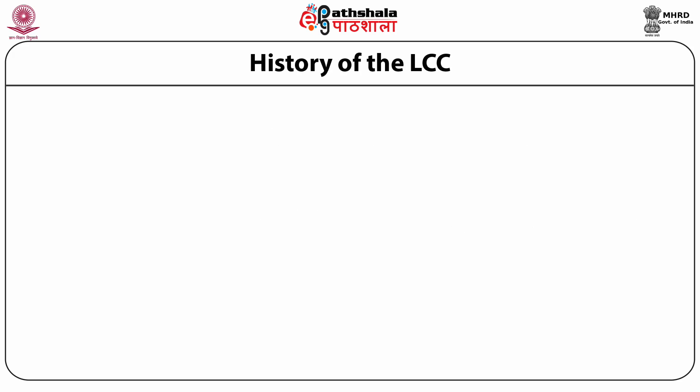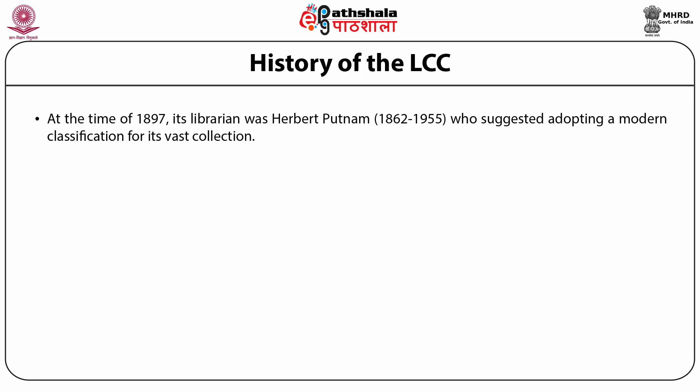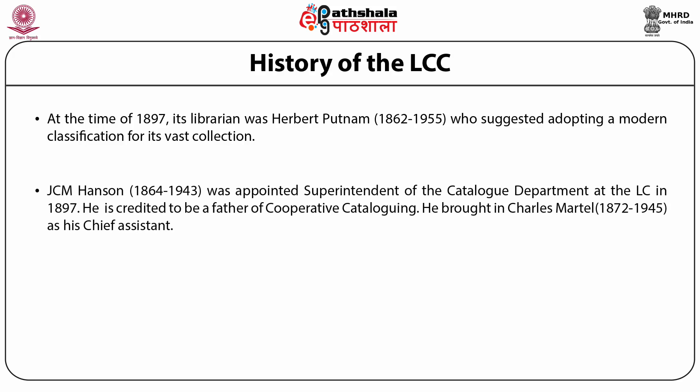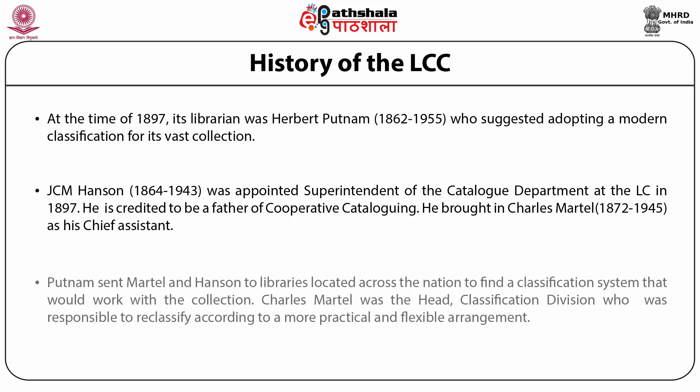History of the Library of Congress: At the time of 1897, its librarian was Mr. Herbert Putnam, who suggested adopting a modern classification for its vast collection. J.C.M. Hanson was appointed superintendent of the Catalog Department at the Library of Congress in 1897. He is credited to be the father of cooperative cataloging. He brought in Charles Martel as his chief assistant. Putnam sent Martel and Hanson to libraries located across the nation to find a classification system that would work with the collection. Charles Martel was head of the classification division, responsible to reclassify according to a more practical and flexible arrangement.